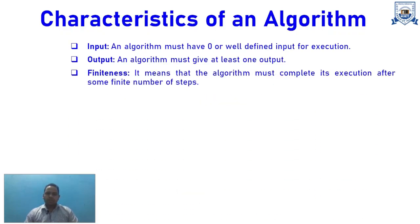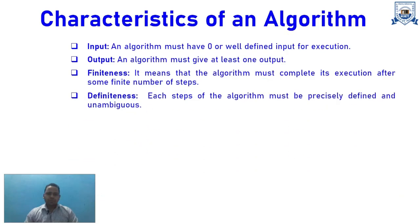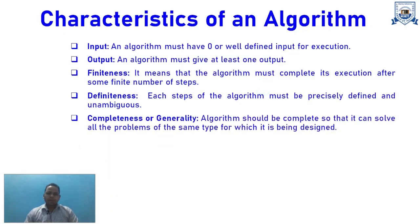Third, Finiteness: the algorithm must complete its execution after a finite number of steps — it must have a definite end. Fourth, Definiteness: each step of the algorithm must be precisely defined and unambiguous — all steps must be clear and simple, with no ambiguity while writing them.